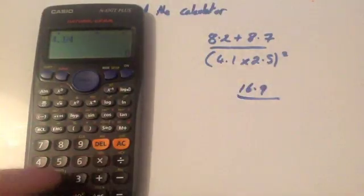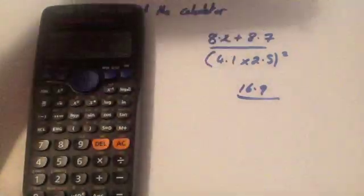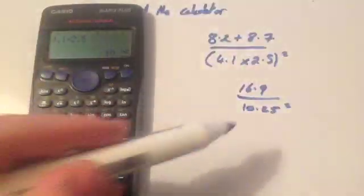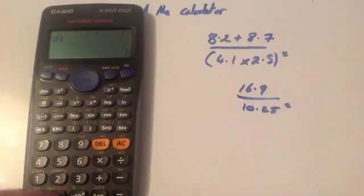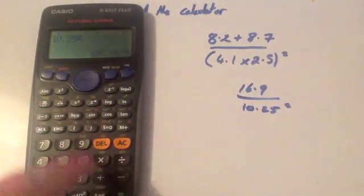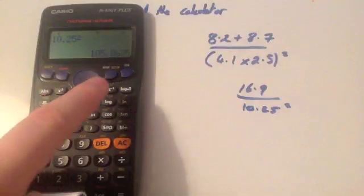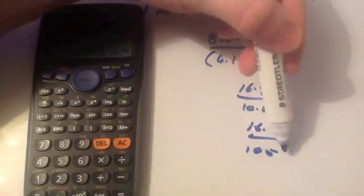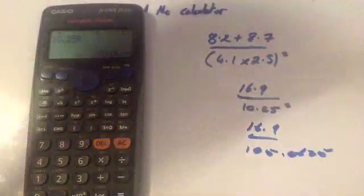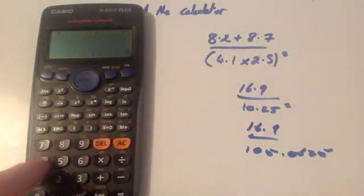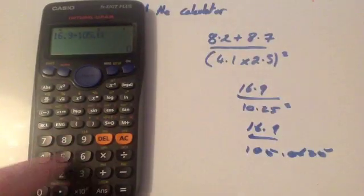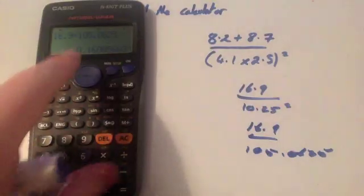So 4.1 times 2.5 equals 10.25. So you've got 10.25 squared. Then doing the squared, so doing 10.25 squared equals 105.0625. So then writing it out again, and do 16.9 over 105.0625. And then finally, typing that into the calculator, 16.9 divided by 105.0625, and then that's your answer.